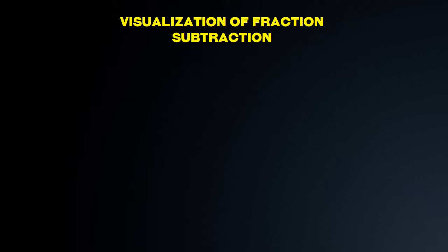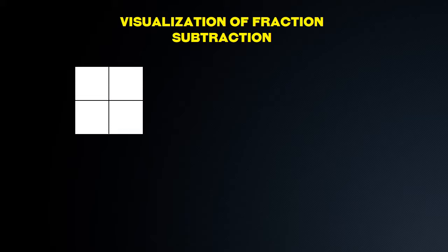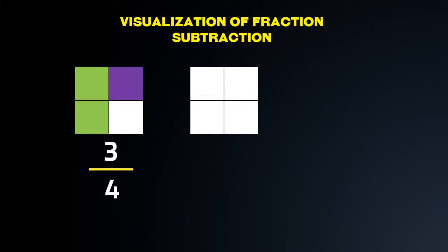We shall visualize it. We shall take example of a square. We shall select 3 parts from total 4 parts, i.e. 3 by 4. Now, we will select 1 part from total 4 parts, i.e. 1 by 4.